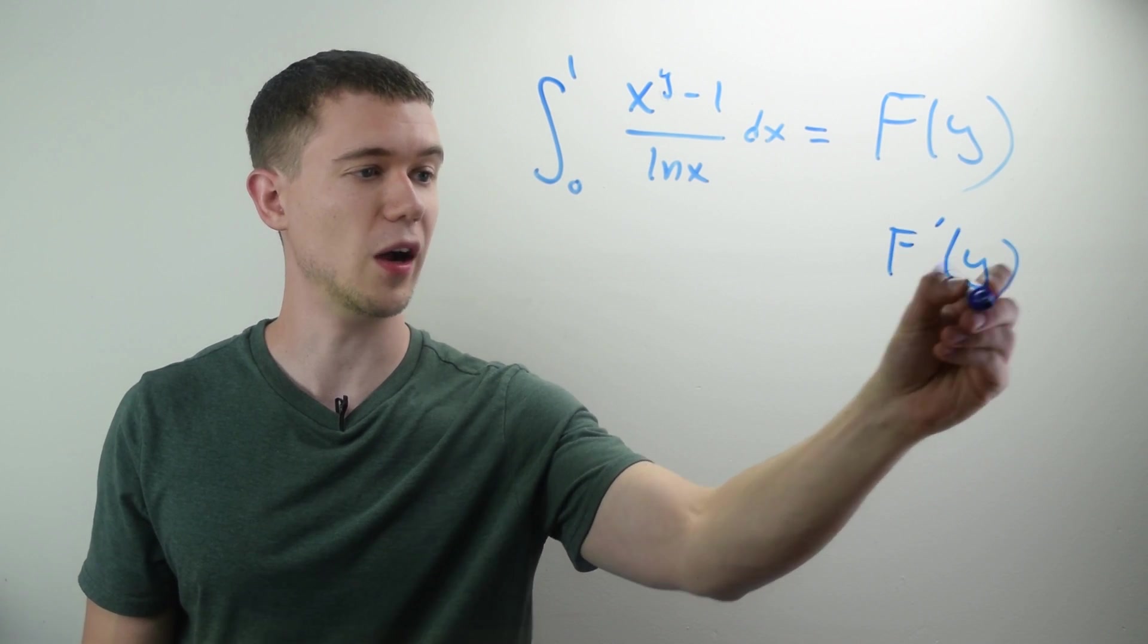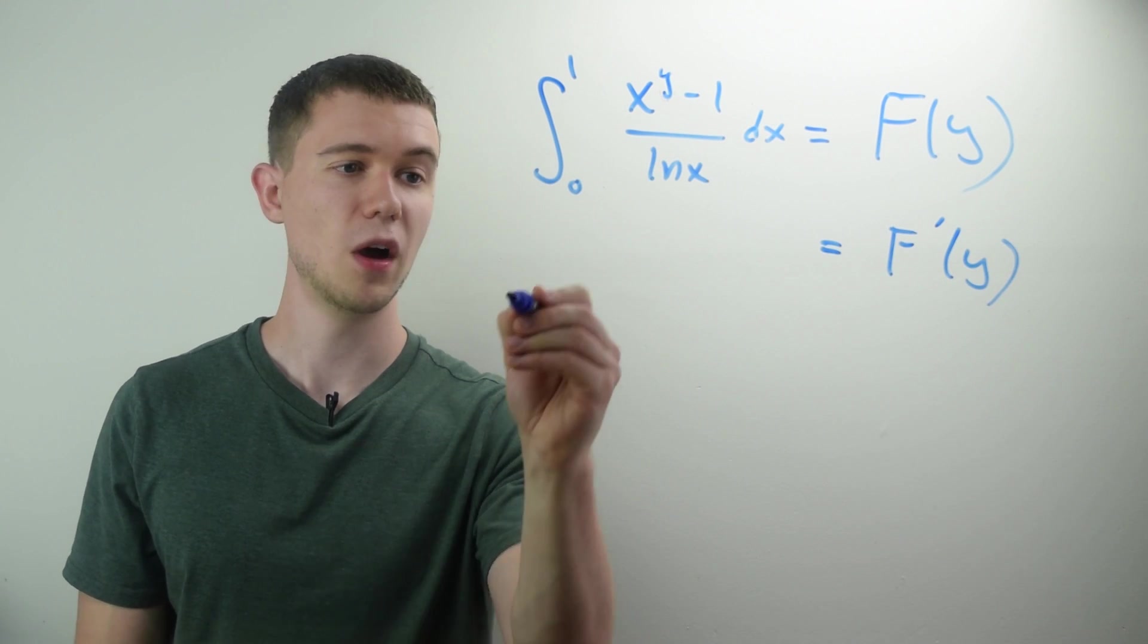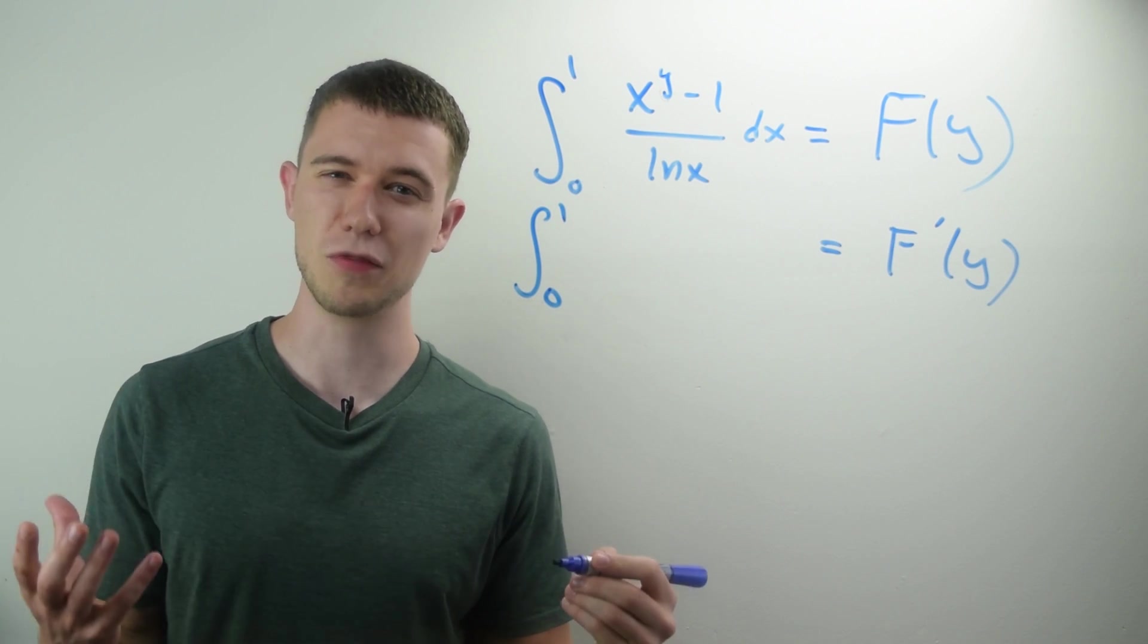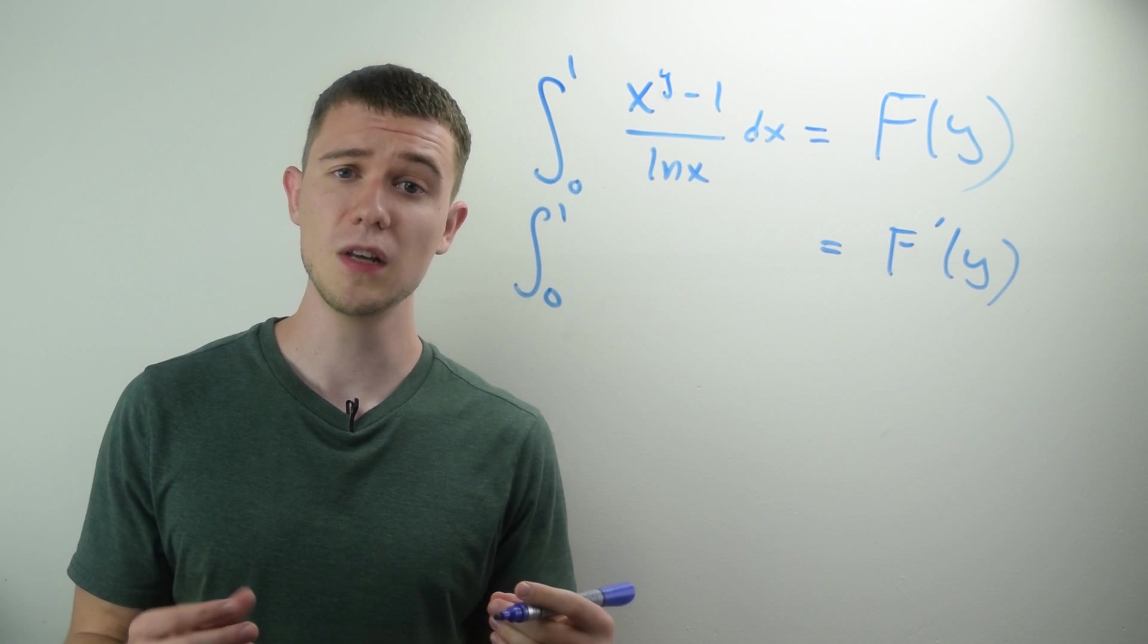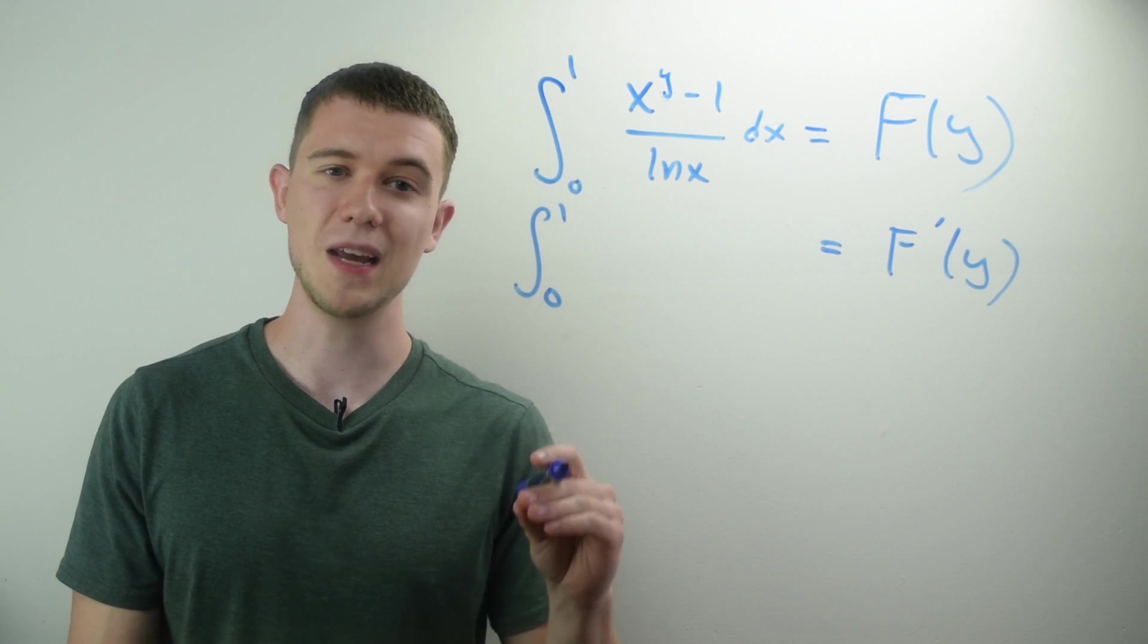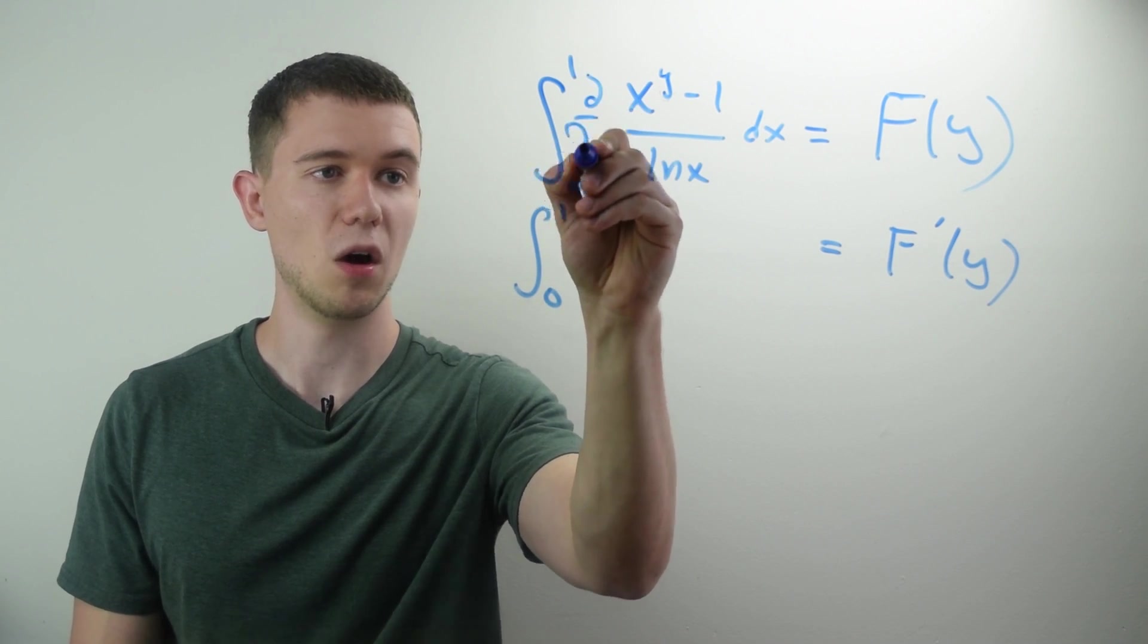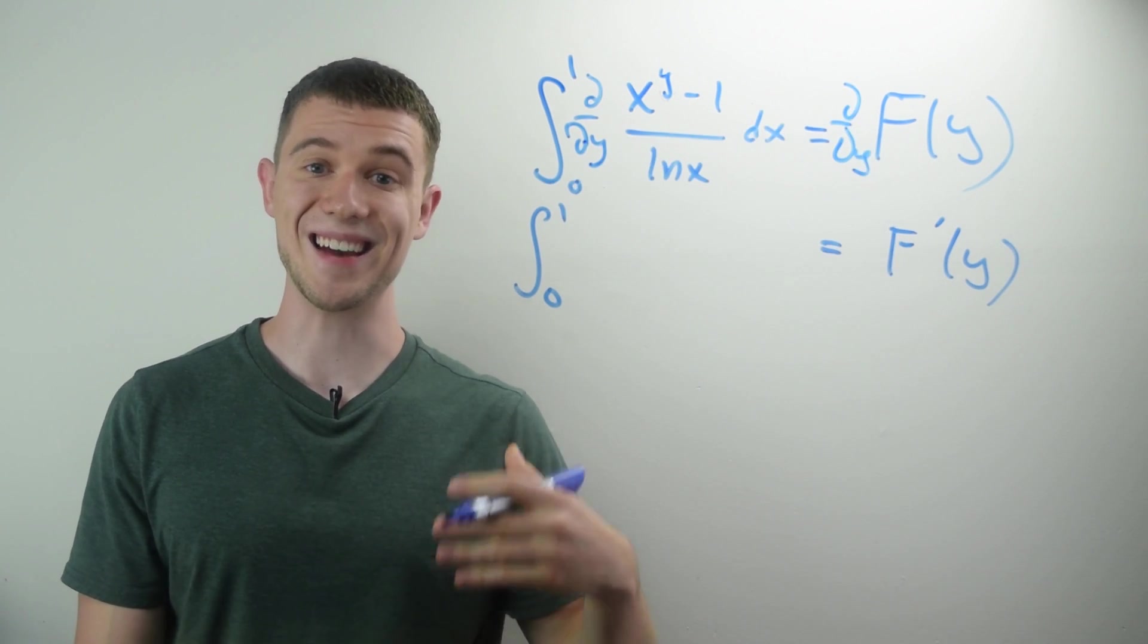Well that means f prime of y should be equal to taking the partial derivative underneath the integral sign, which is really the trick, the thing that's really motivating this trick. So how do we take partial derivatives? Well remember partial derivative, you keep the other variable constant. So if I'm taking the partial derivative with respect to y on both sides, that's what I'm really doing here. That means x is a constant.